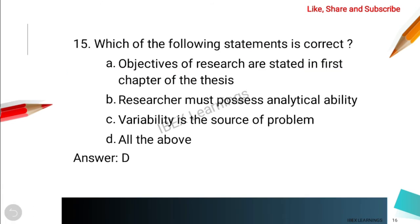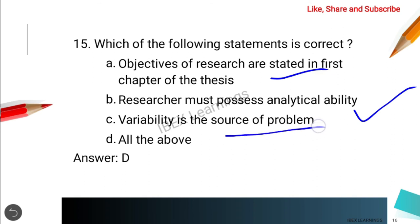The next question is: which of the following statements is correct? The first option is that objectives of the research are stated in the first chapter. The researcher must possess analytical ability — that is obvious, analytical ability is necessary. Variability is the source of a problem — that is also obvious. The correct answer is all of the above.